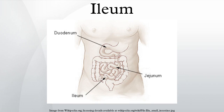The function of the ileum is mainly to absorb vitamin B12 and bile salts, and whatever products of digestion were not absorbed by the jejunum. The wall itself is made up of folds, each of which has many tiny finger-like projections known as villi on its surface. In turn, the epithelial cells that line these villi possess even larger numbers of microvilli. Therefore, the ileum has an extremely large surface area both for the adsorption of enzyme molecules and for the absorption of products of digestion.